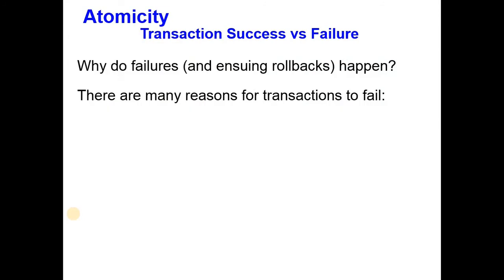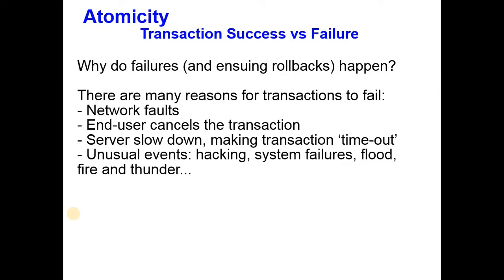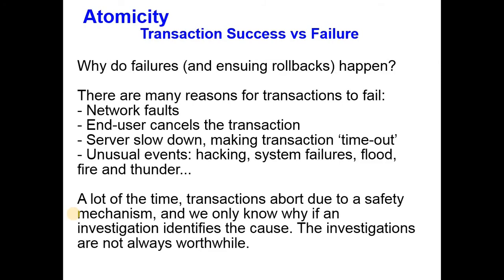A lot of the time, we just don't know why a record in a database goes wrong — a network failure, a slowdown in the server. Transactions are set up to run in a given time in case something goes wrong. It might be said in advance that if it takes more than five seconds to record this information, something has gone wrong — cancel it just in case. In any case, most of the time we have to accept that the transaction couldn't be recorded. The important thing is that when that happens, we need to be able to recover — to step back and not record one half of the transaction while losing the other half.